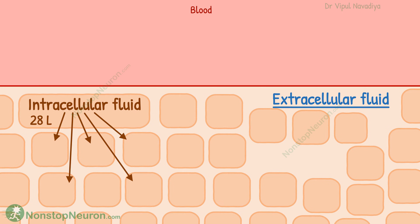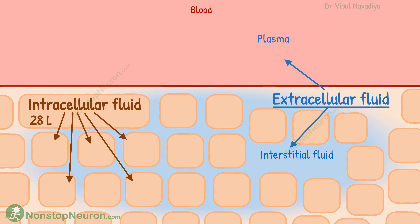Now let's talk about the extracellular fluid. As the name suggests, this is the fluid outside the cells. Here we have two sub-compartments: the interstitial fluid and the plasma. The interstitium is the space in between the cells, and the total volume of interstitial fluid throughout the body is about 11 liters.